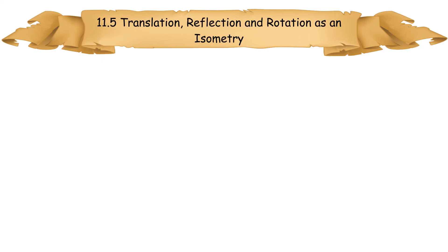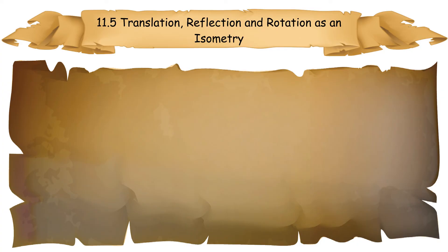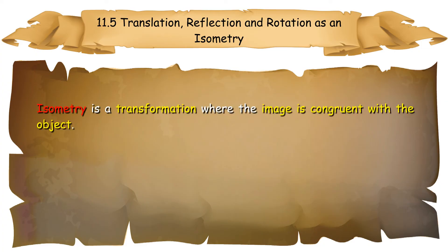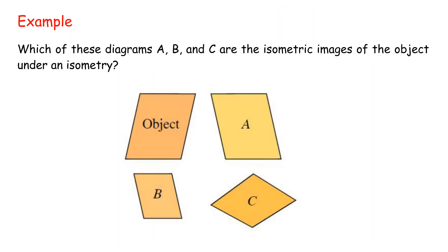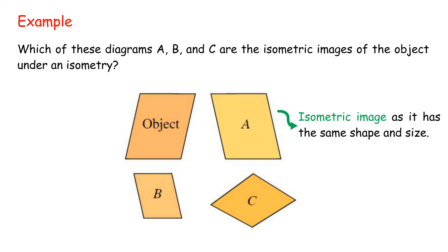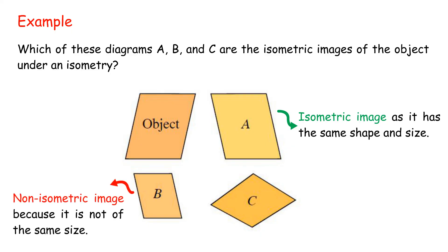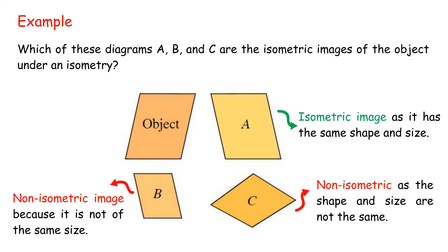11.5 Translation, Reflection, and Rotation as an Isometry. Isometry is a transformation where the image is congruent with the object. Under an isometry, objects and images are of equal shape and size; therefore, objects and images are congruent. Example: Which of diagrams A, B, and C are isometric images of the object under an isometry? Solution: Figure A is an isometric image as it has the same shape and size. Figure B is non-isometric because it is not the same size. Figure C is non-isometric as the shape and size are not the same.